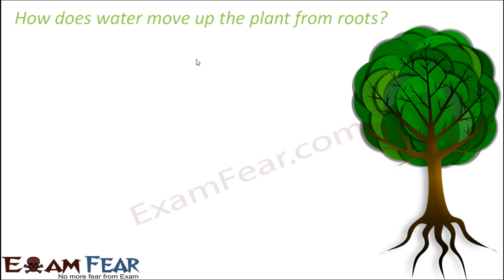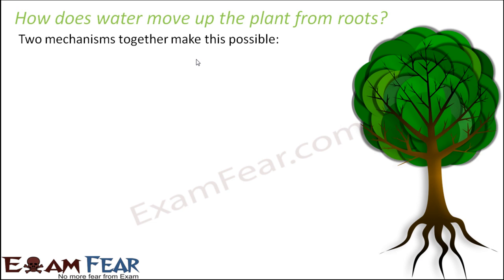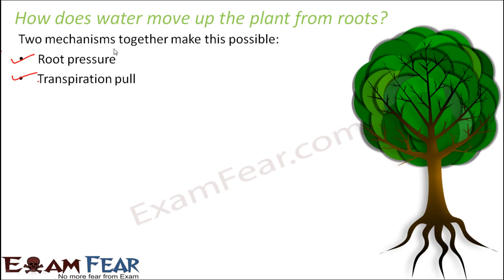Let us look at the mechanisms which help water move up the plant from the roots. There are two mechanisms which together make this possible: first is root pressure, and the second is transpiration pull. These two together help water move in the upward direction against the gravitational pull.